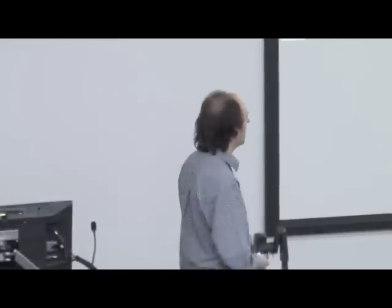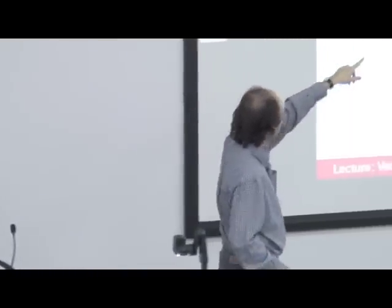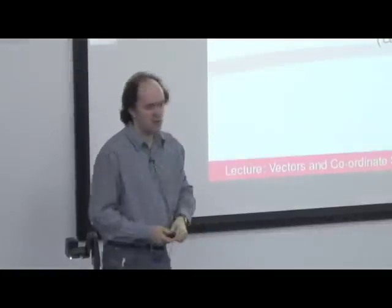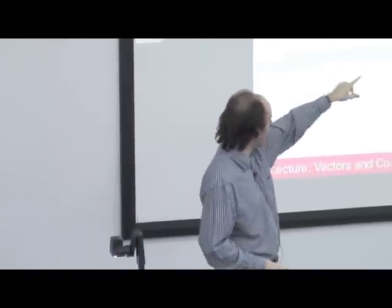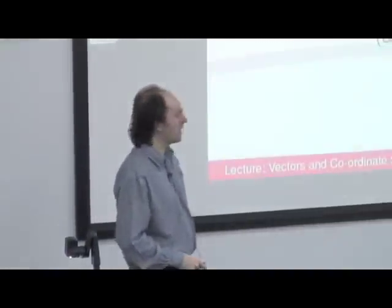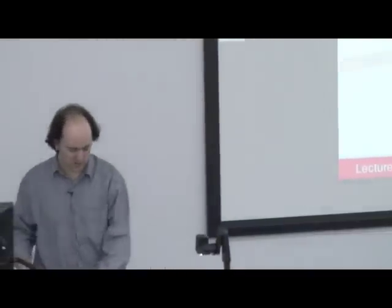Vector addition — you should all know this by now. There are two methods. There's a triangle method where you put the end of one vector on the start of the other one, line them up, and your resultant R will be that one. The other method is a parallelogram method. A plus B equals R, and you know that those are the same thing.